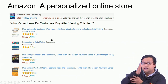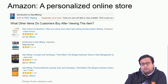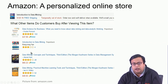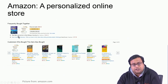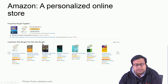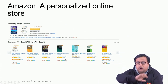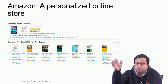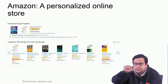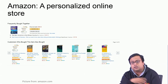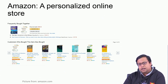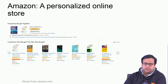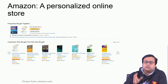Different purchase situations in a customer journey call for different recommendation types. 'Viewed then bought' applies during the information-search stage; 'bought together' applies at the purchase stage; 'customers who bought also bought' is a post-purchase recommendation — appearing after payment confirmation or when you reopen Amazon to show what other buyers of your product also purchased.